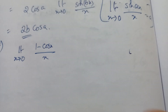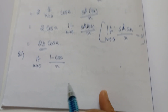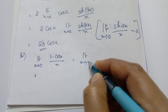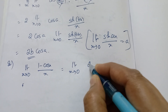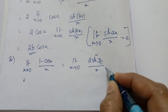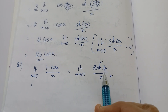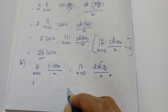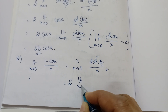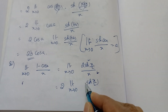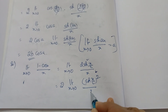Next question: limit x tends to 0 of (1 − cos x) / x. How to solve this? Remember the formula: 1 − cos x = 2·sin²(x/2). If it were 1 + cos x, then it would be 2·cos²(x/2). So I write: limit x tends to 0 of 2·sin²(x/2) / x. I'm taking 2 outside: 2 · limit x tends to 0 of [sin(x/2)]² / x.